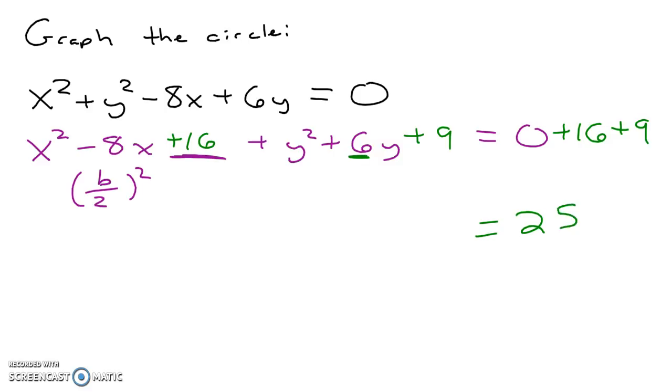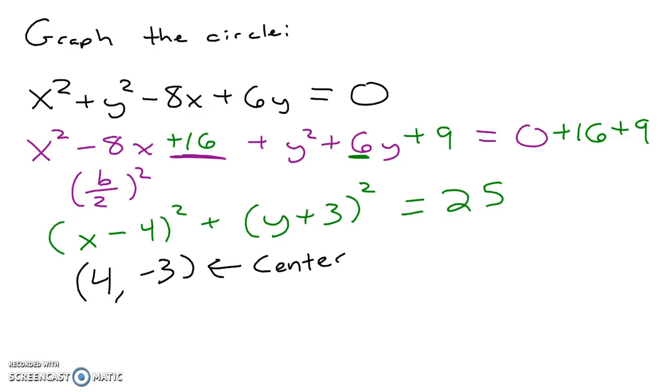Now, completing the square with these values shows us that we have x minus 4 squared. You'll notice that this equation is now in the form of the equation of the circle. It tells us what our center of our circle is, because x minus 4 squared gives an x value of 4 for the center of the circle and a y value of negative 3. Because this portion here is the radius squared, we know the radius is the square root of 25, which is 5.